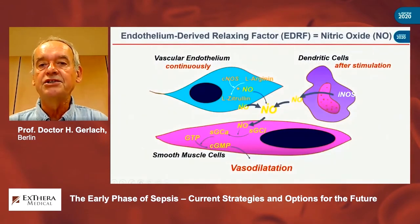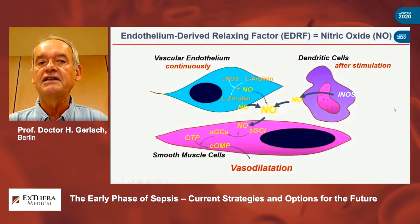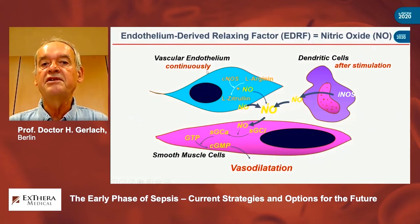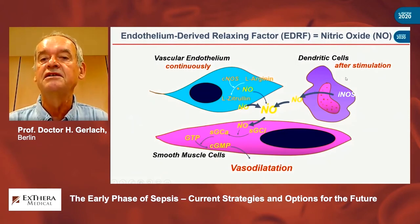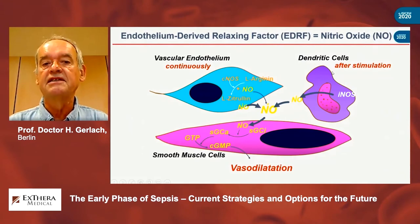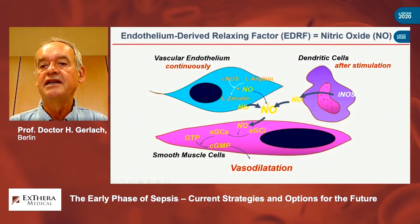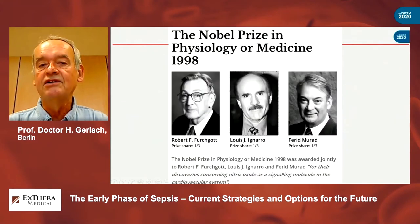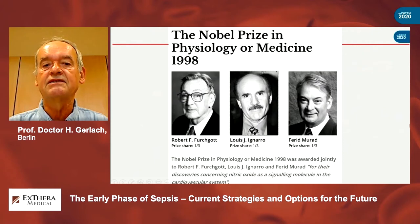Finally, we have vasodilation, which is induced by nitric oxide. Nitric oxide is produced continuously by the endothelium, but production is increased after stimulation — for instance by dendritic cells. This finally causes vasodilation in the smooth muscle cells and the so-called vasoplegia in septic shock patients. For this discovery, three investigators received the Nobel Prize in 1998.